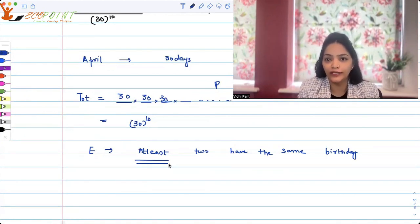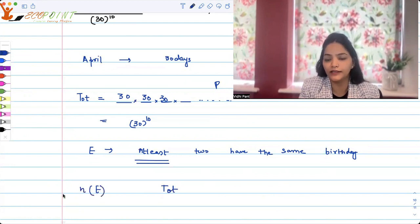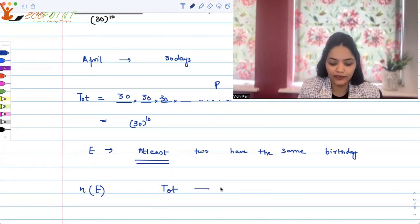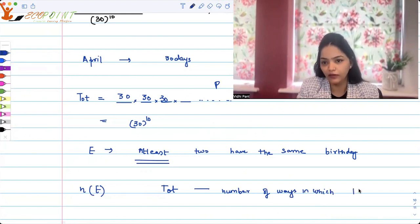The best thing you can work out in at least problem is by looking at total. So if you want to know the number of cases for event E, it would be the total cases minus if you take the case of none, that is none of them share their birthday. So number of ways for E would be total ways minus number of ways in which 10 persons have different birthdays. They don't share birthdays.